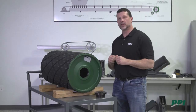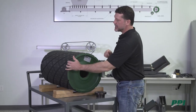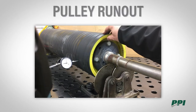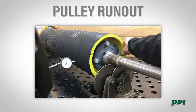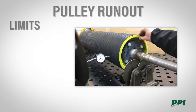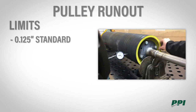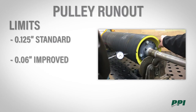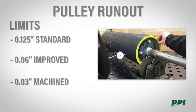Next we're going to talk about pulley runout, which is the change in the belt contact around the circumference of your pulley as it rotates. This can be checked with a dial indicator as we roll the pulley around 360 degrees. Limits for TIR vary from 125 thousandths of an inch, which is the SEMA standard, to 60 thousandths of an inch, which is the improved standard, or all the way down to 30 thousandths of an inch for our most demanding applications.